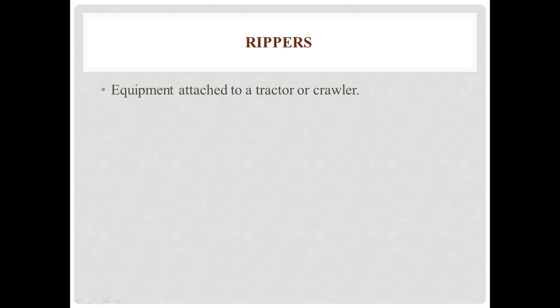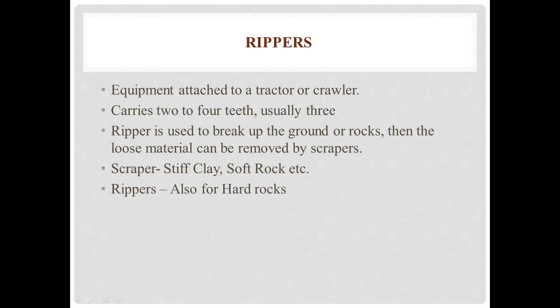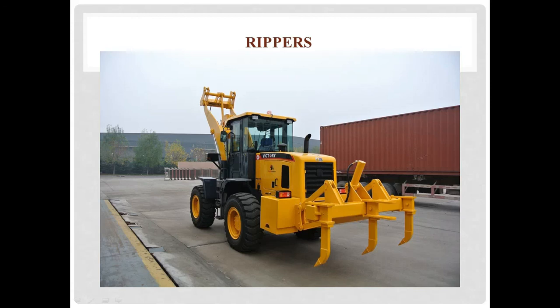Next, rippers. Scrapers and rippers are actually the same equipment but with different sharp cutting edges. This equipment is attached to a tractor or crawler, but here it will carry 2 to 4 teeth - in most cases rippers consist of 3 sharp cutting edges. While scrapers could only scrape stiff clay or soft rock, rippers can excavate from hard rocks also - there are also types called rock rippers. You can call it ripper dozer, scraper dozer, rock rippers, or rippers - there are various names for the same.